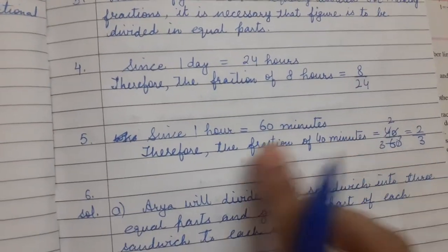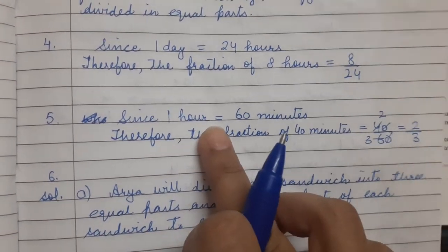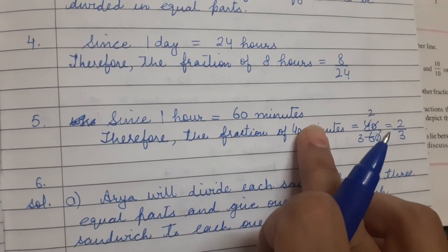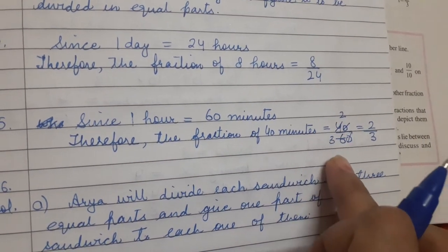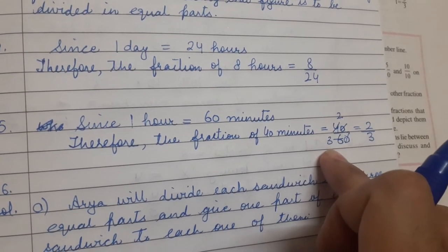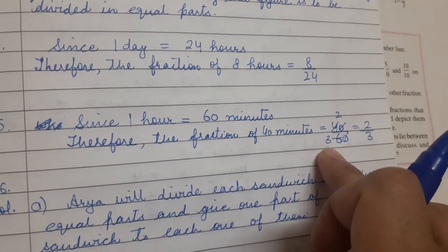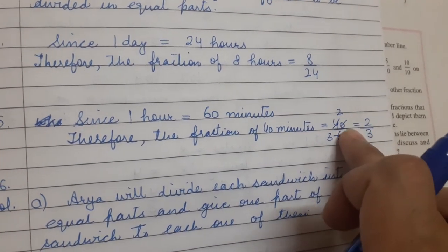Fifth question: what fraction of an hour is 40 minutes? Now since 1 hour is equal to 60 minutes, you have to find the fraction of 40 minutes, therefore the fraction of 40 minutes is 40 by 60. I have cut 0 from 0, and 4 and 6 are divided by 2. So the fraction will become 2 by 3.